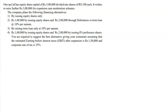1UP Limited has equity share capital of ₹5 lakhs divided into equity shares of ₹100 each. It wishes to raise further ₹3 lakhs for expansion. The company plans the following financing alternatives: issuing shares only (₹3L equity); ₹1L equity shares and ₹2L debentures or term loan at 10%; term loan only at 10% (₹3L); and ₹1L equity shares with ₹2L 8% preference shares.